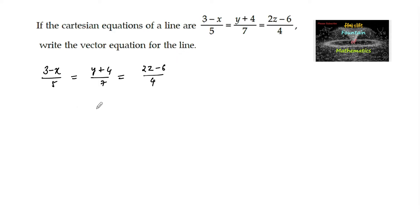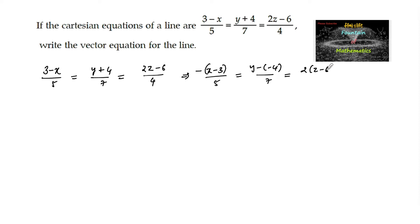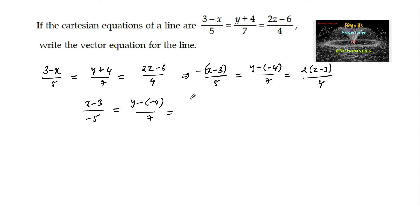This line equation can also be written by taking minus common: (x minus 3) upon negative 5 equals (y minus of minus 4) upon 7 equals (z minus 3) upon 2.